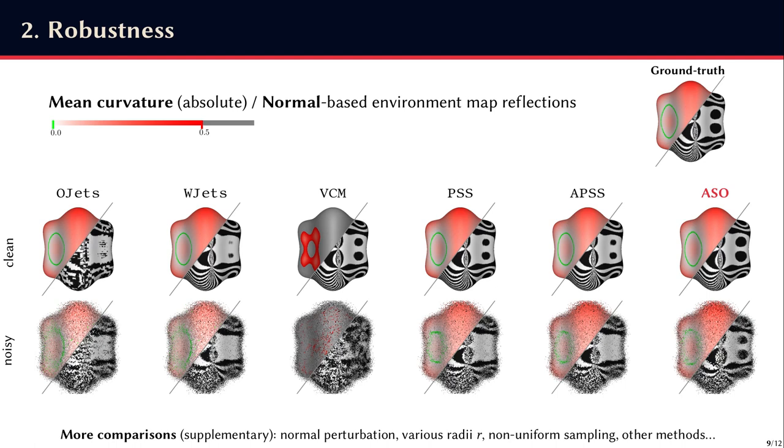We have similar good results on other comparisons, with noise on normal vectors, various neighborhood sizes, various sampling, as well as against other methods not shown here.